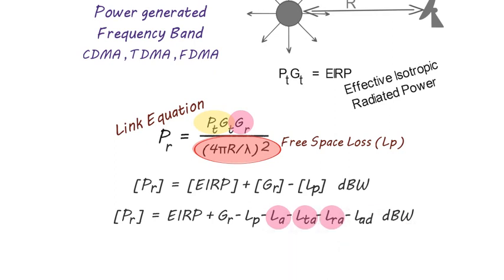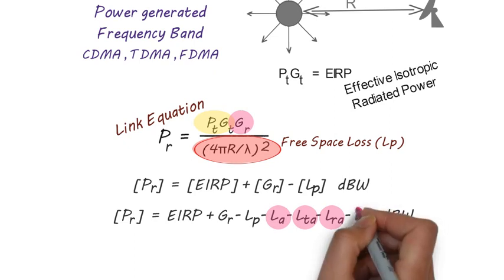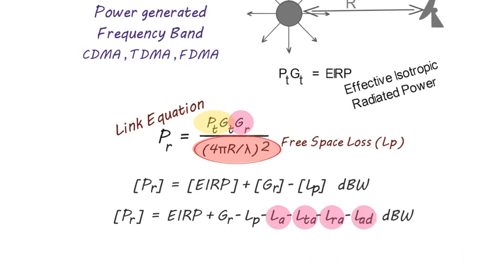LRA is losses associated with receiving antenna, and LED is any additional loss. Here all the losses must be in decibel unit.